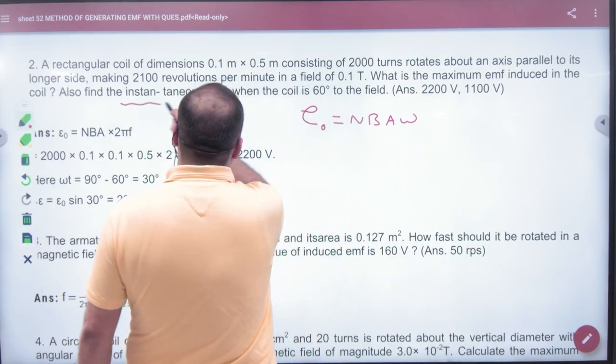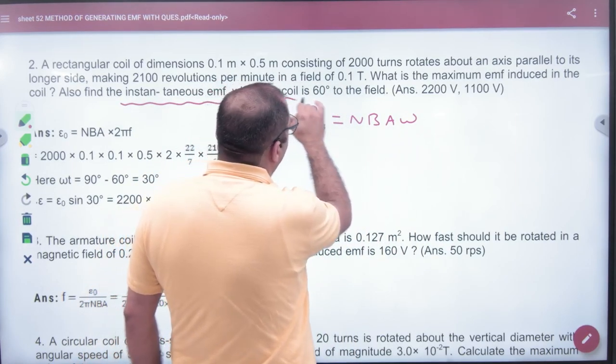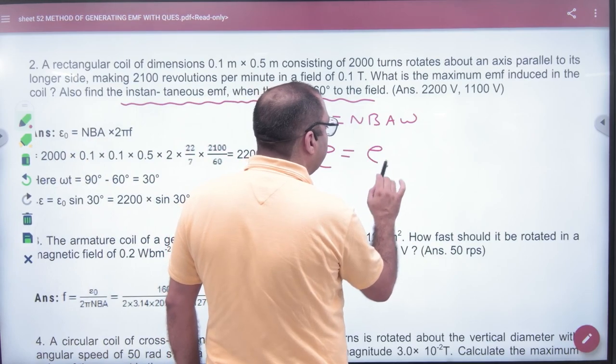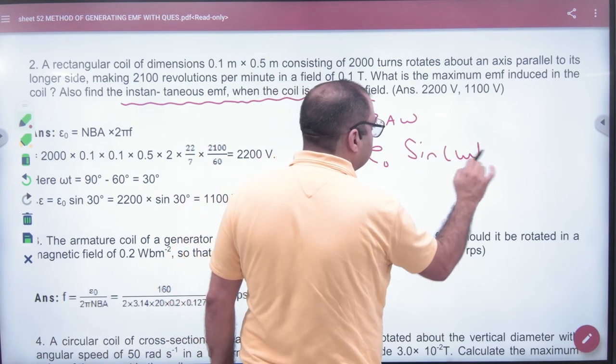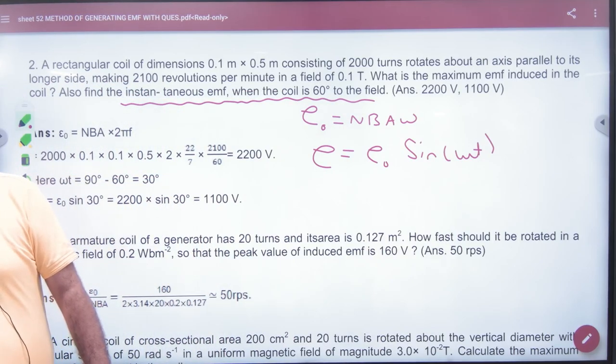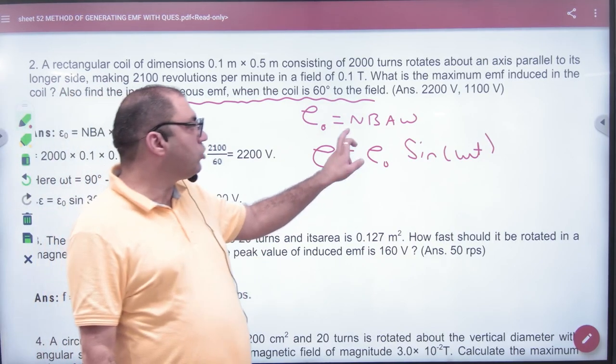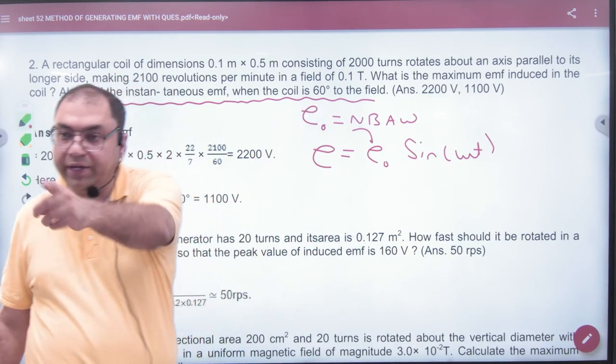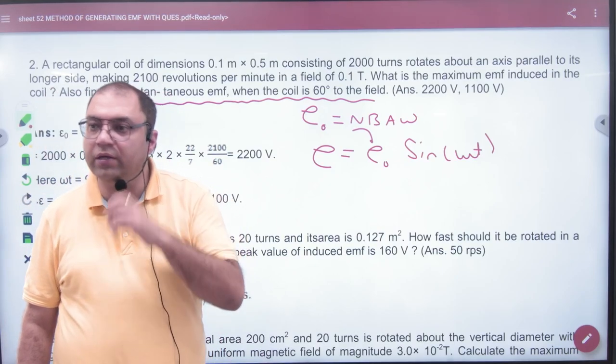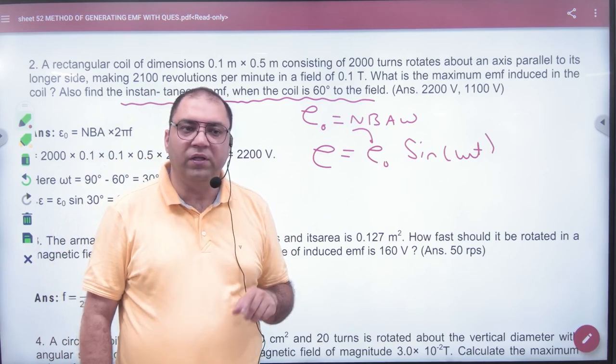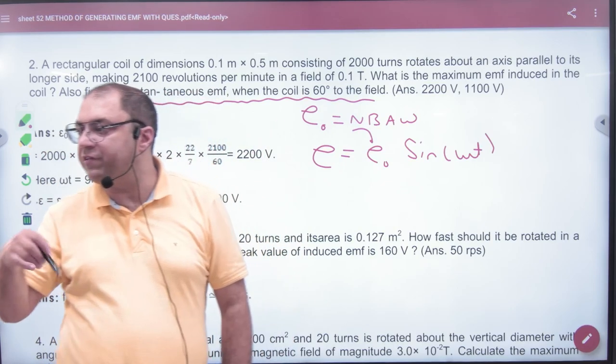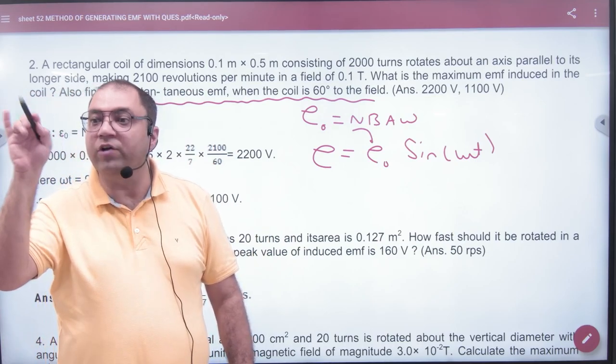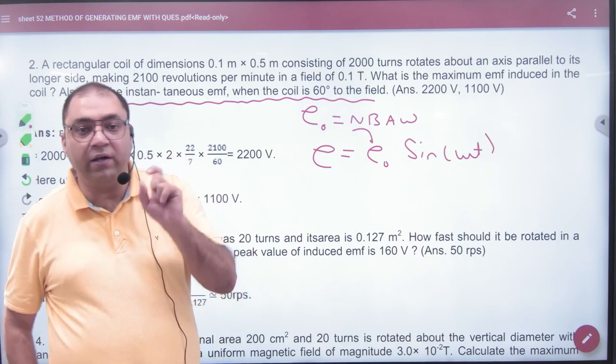Next is: what is the instantaneous EMF when coil is 60 degrees to the field? Now this is important. Instantaneous EMF: e₀ sin(ωt). This is the instantaneous EMF. This e₀ you have removed from first part. Now in omega t, people know what will put here: 60 degrees? Because it's the derivation - sin omega t, this is called flux. Cos omega t. E is minus dφ by dt, phi cos omega t. Put omega t angle between B and area vector.